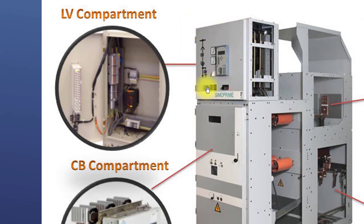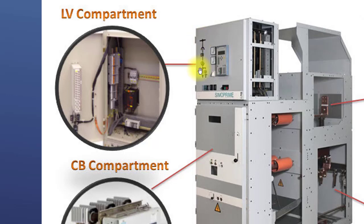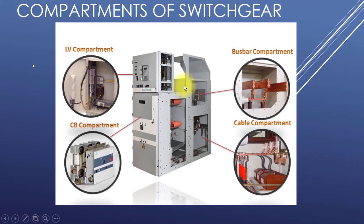Here you can see the low voltage compartment. The overcurrent relay is installed here in the LV compartment. Metering is also installed — you can see a voltmeter and ammeter. There are selector switches, and a red and green switch to open and close the breaker. There are also some test sockets. This is the mimic diagram showing the position of the switchgear equipment.